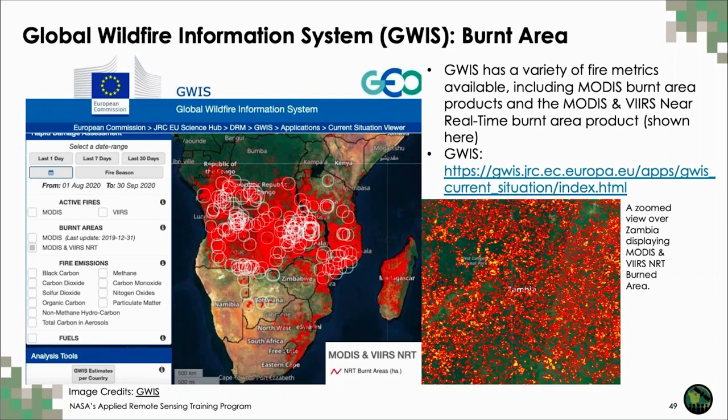I want to quickly mention GWIS again for burned area estimates on a global scale. The MODIS burned area product, also available through GWIS, is your most reliable option for burned area mapping. The last update to this dataset on GWIS was the end of 2019, so I've displayed the near-real-time MODIS and VIIRS burned area layer. Be cautious when using this product since it's not as reliable as the science-standard MODIS product, but it can be useful for more recent estimates of burned area or fire occurrence.